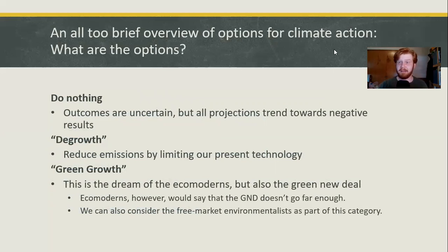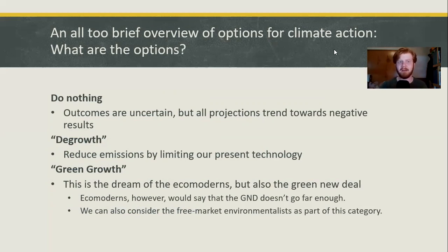One better option is the idea of degrowth, where we just decide to cut back — we're not going to drive anymore, we're going to make air travel only for the essential. We saw a kind of degrowth in 2020 with the coronavirus: people stayed home, didn't drive anywhere, and carbon emissions actually went down for a few months. What also came with that were some not-so-great economic impacts. Degrowth sounds good on paper, but we have to ask who ends up becoming harmed, because degrowth comes with things like collapse of economy.